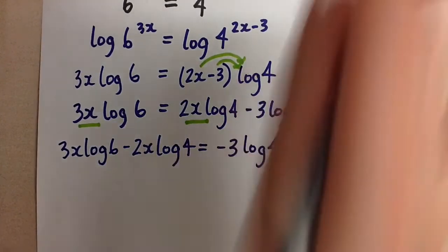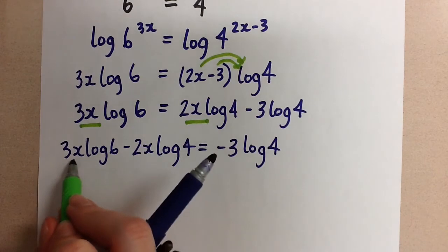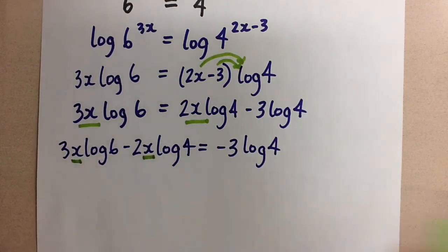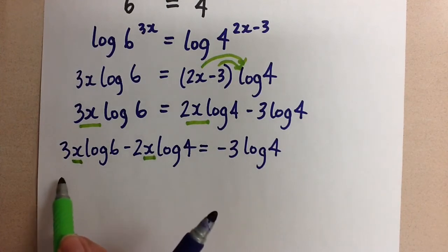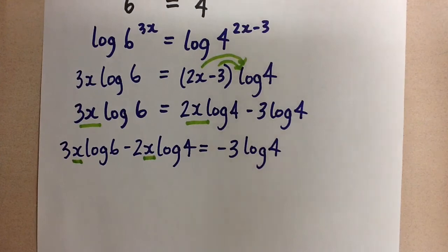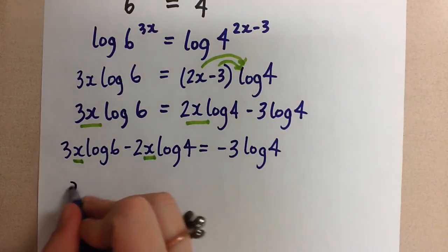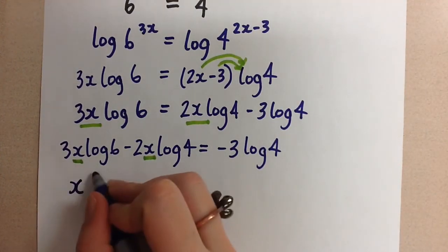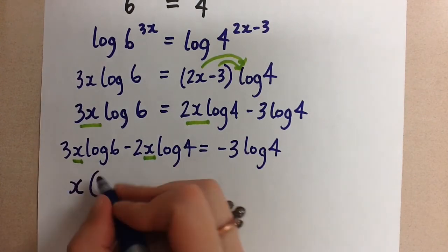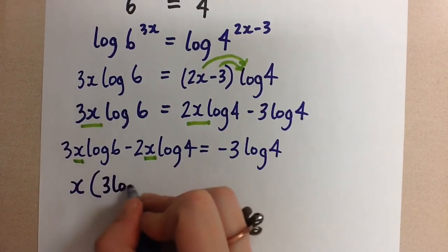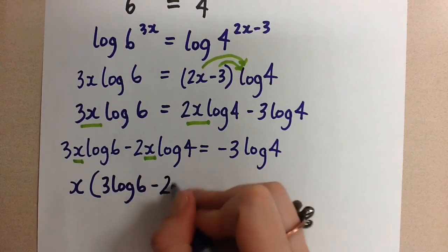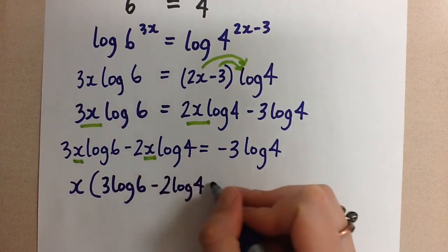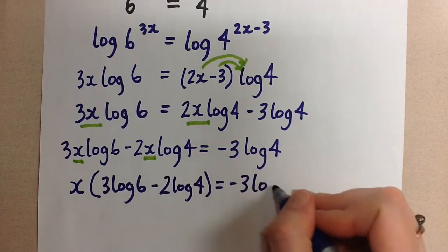We want to get that x by itself. So we have this common x factor in both of these terms. We can pull out the x to the front and factor it out. And so that looks like this. Bring the x out. From this term we're left with 3 log 6. And in this term we're left with minus 2 log 4. And on the right-hand side we still have this.